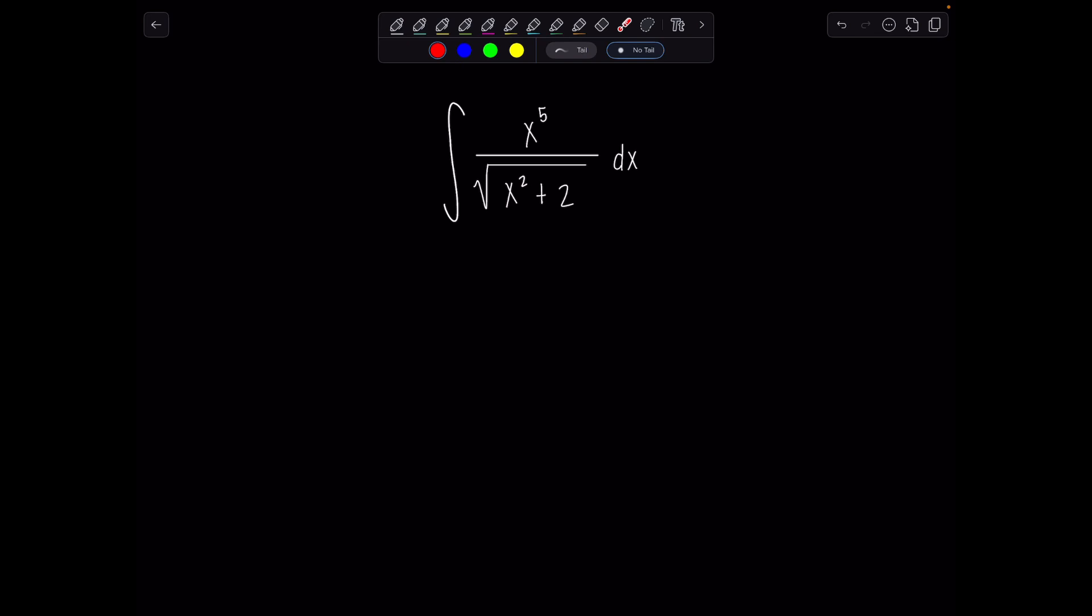How do we pick which trig sub to use? Well you look at this expression here in the denominator x squared plus 2. Since we have a quadratic expression with addition then we're going to use the substitution that involves tangent theta. So we're going to let x equal the square root of 2 tan theta. Then I need to figure out how to rewrite this entire integral in terms of theta. So we differentiate both sides. dx is square root of 2 secant squared theta d theta.